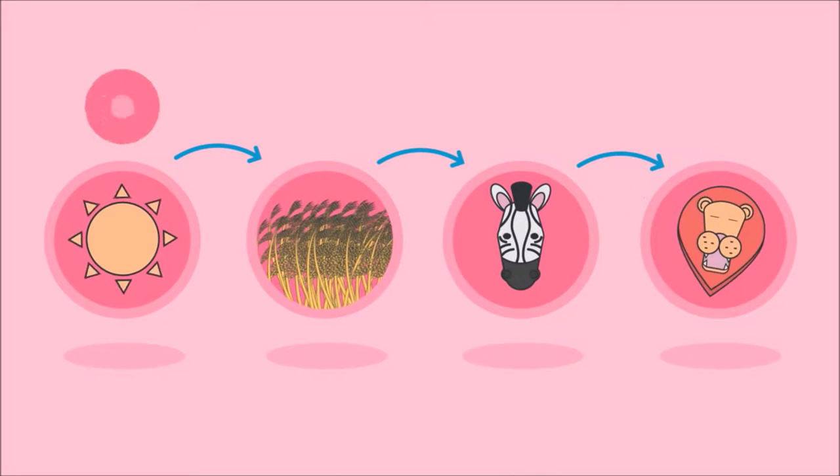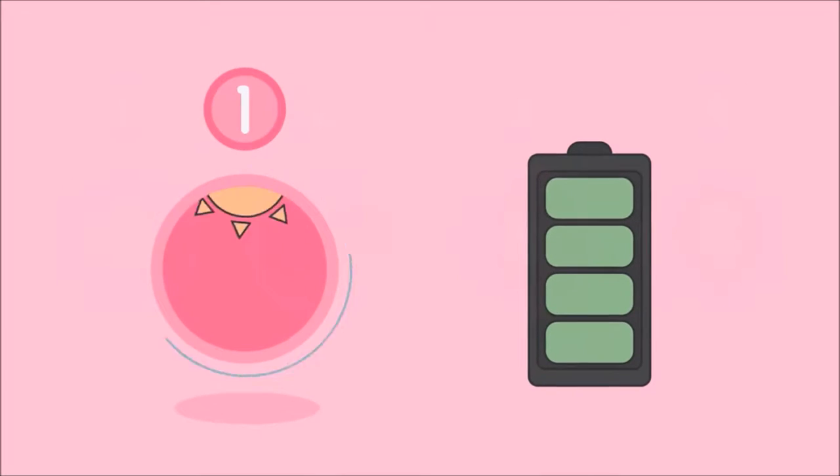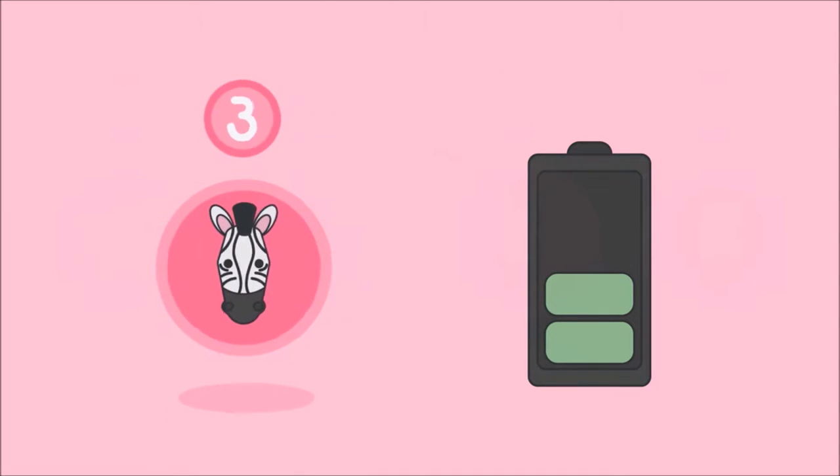Typically food chains involve around four steps. It is unusual for them to be longer because energy is lost between each step and so the energy available for the next organism decreases.